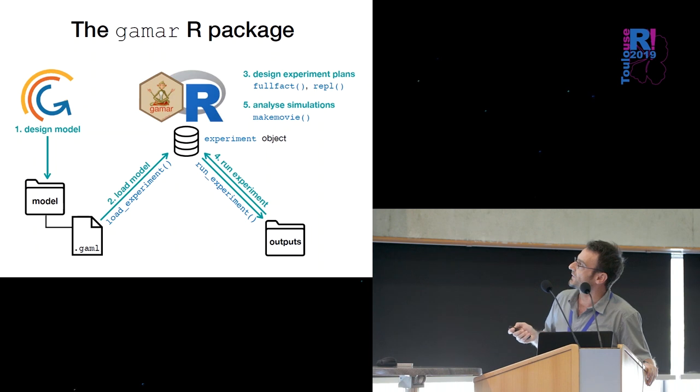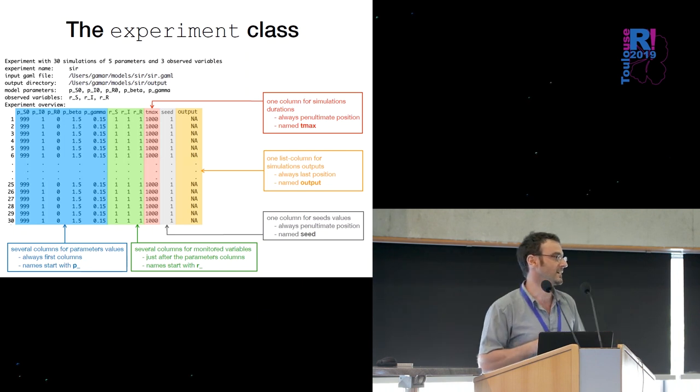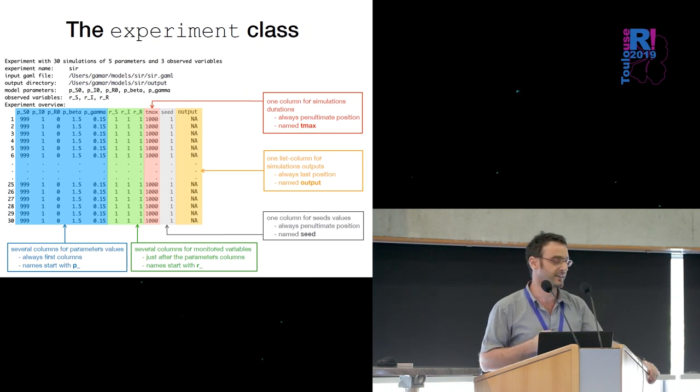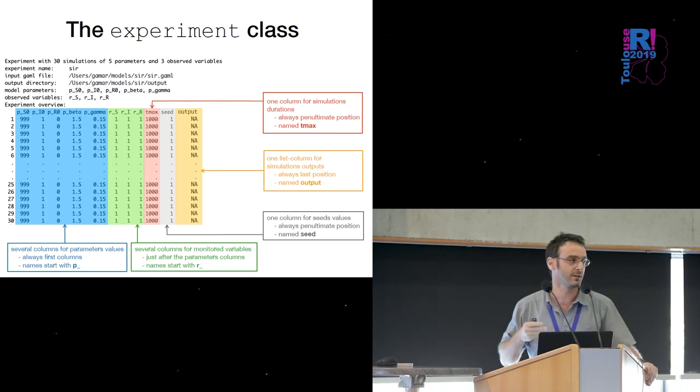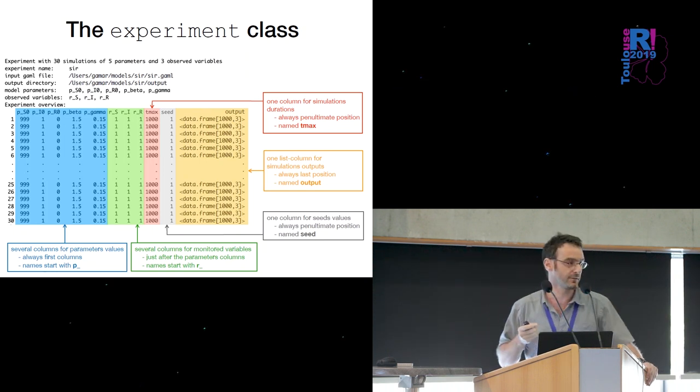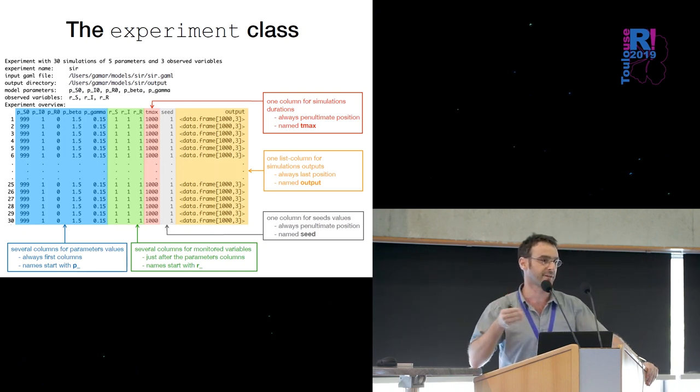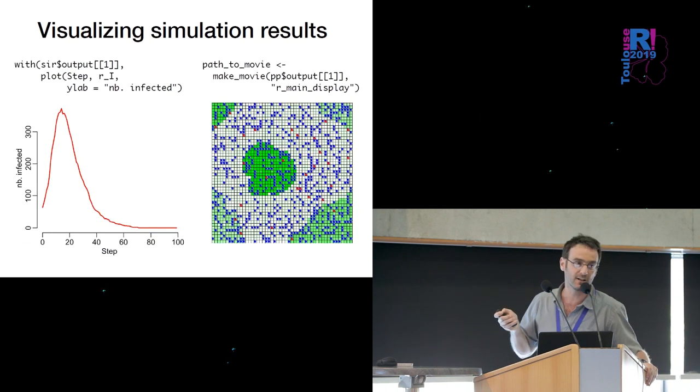And you can generate simulation experiment plans you can run those plans and get the results and then analyze them visualize them do some sensitivity analysis model calibrations hypothesis testing and so on. And the simulation outputs are sitting in a directory so here's the class of that package experiment class is typically a simple data frame where each row is one single simulation and each column contains the model parameter values the rates at which you want to observe the monitored variables here in green the length of the duration of the simulations and the last column is a list column that contains data frames of the time series of the observed variables and that object is linked to the input GAMA file that define the model and to the output directory that contains the simulation outputs.